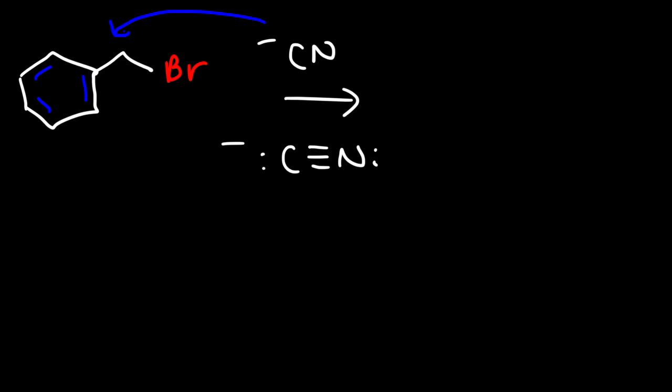Something else that we could do is we could start with benzyl bromide and react it with another nucleophile. In this case we're going to use cyanide. Cyanide can attack the carbon, kick out the bromine atom. And now we have a nitrile group on a carbon that's next to the benzene ring.